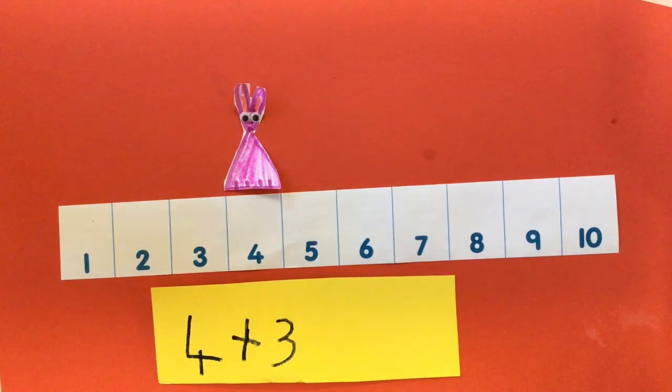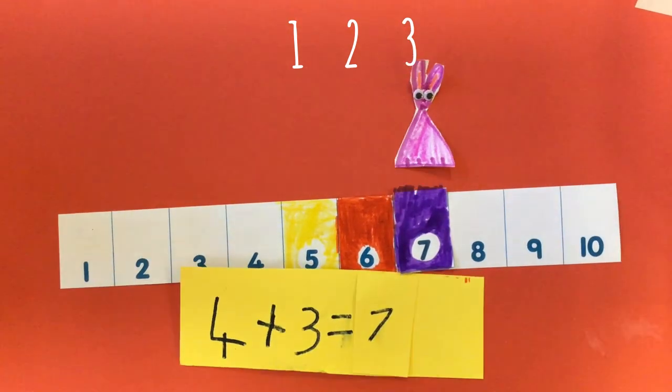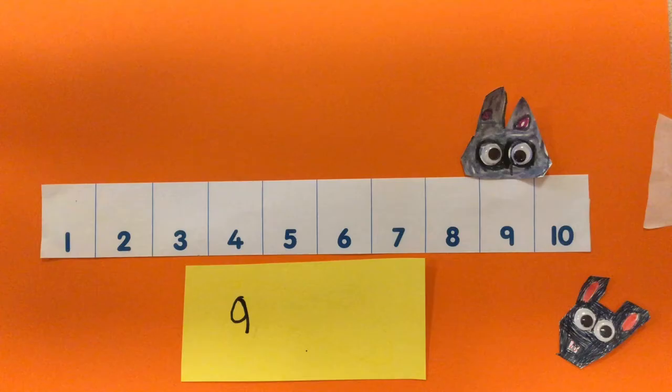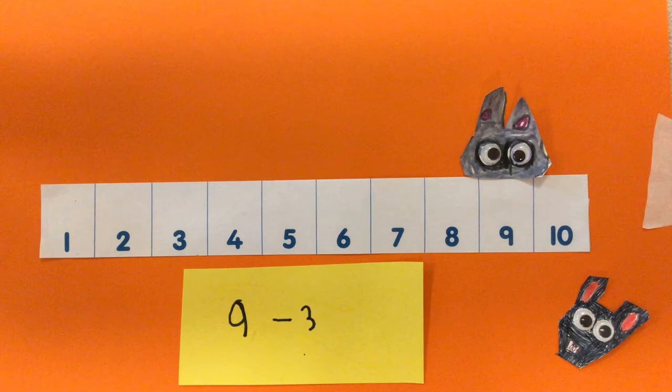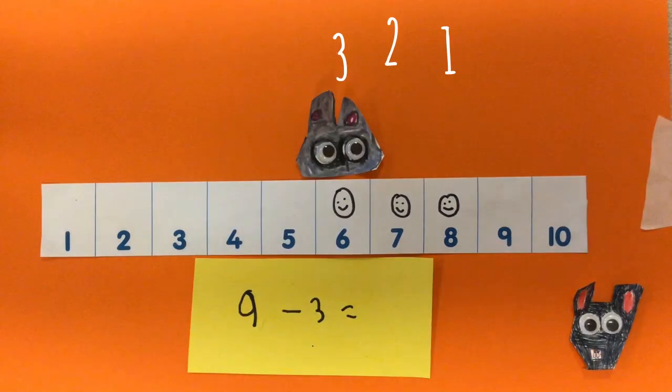4 add 3. 1, 2, 3 equals 7. 9 take away 3. 1, 2, 3 equals 6.